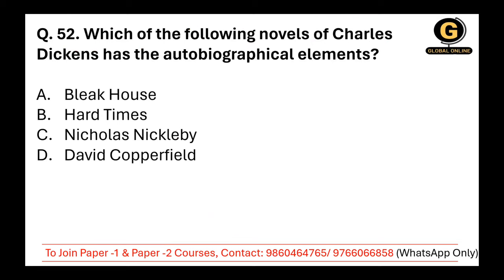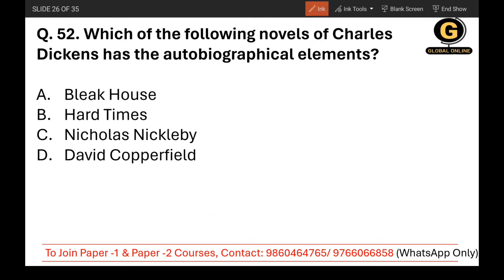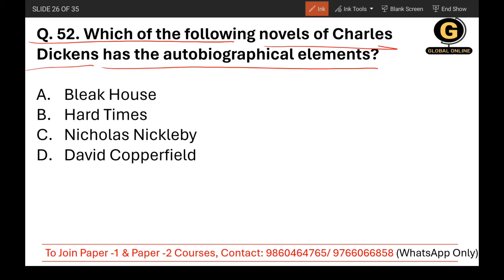Question 52: Which of the following novels by Charles Dickens has autobiographical elements? The answer is David Copperfield — it is a fictional autobiography published in 1850.